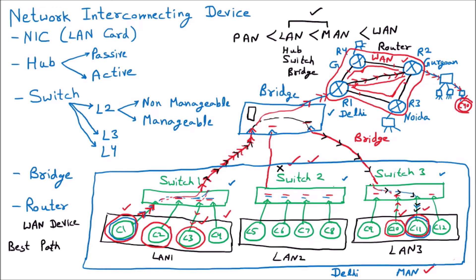Obviously the data will go with the direct path — R1 to R2 — and R2 will further send it to the bridges and switches, which will forward it to C40. But the router is taking the shortest path right now. What if the shortest path is congested? In that case the router is intelligent enough to take another path, which is why we say the router provides the best path.